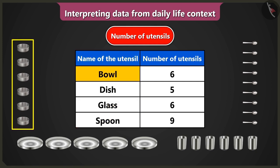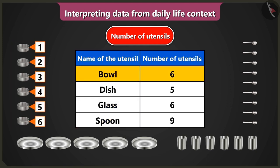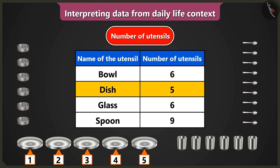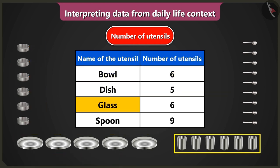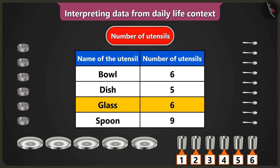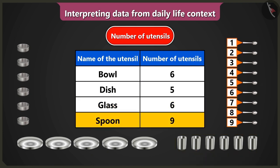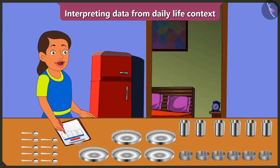Here the number of bowls is six, the number of dishes are five, the number of glasses are six and the number of spoons are nine. I have interpreted the data about the number of utensils from this table.